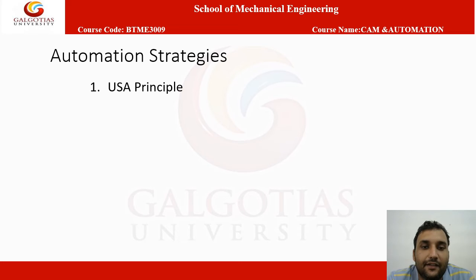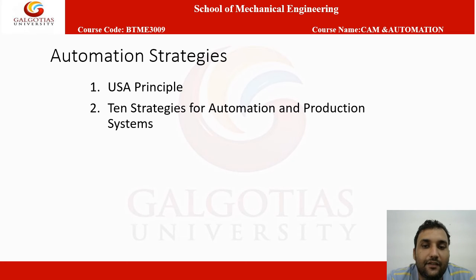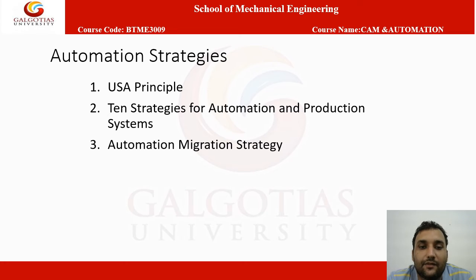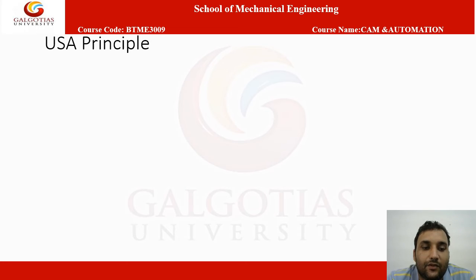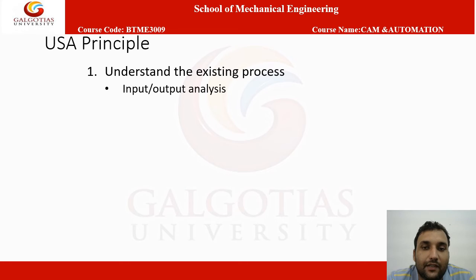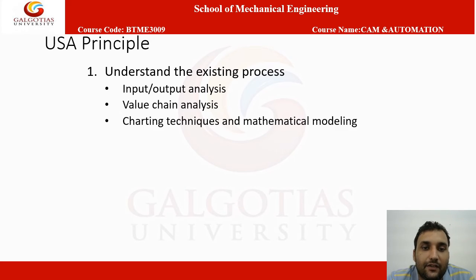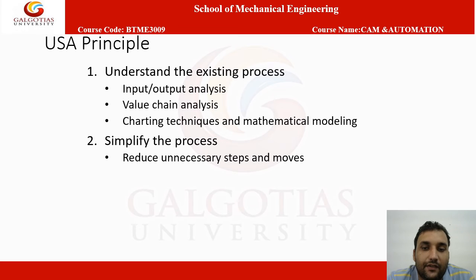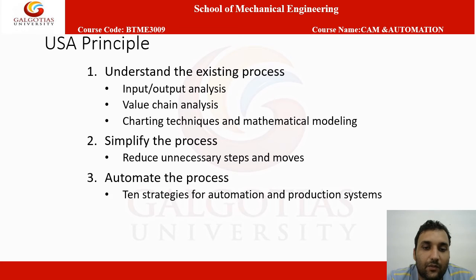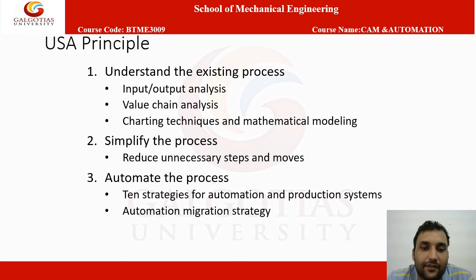Automating strategies include the USA Principle and 10 strategies for automation and production systems, as well as automation migration strategies. The USA Principle contains three steps: 1. Understand the existing process — through input and output analysis, value chain analysis, charting techniques, and mathematical models. 2. Simplify the process — reduce unnecessary steps and moves. 3. Automate the process — using the 10 strategies for automation and production systems.